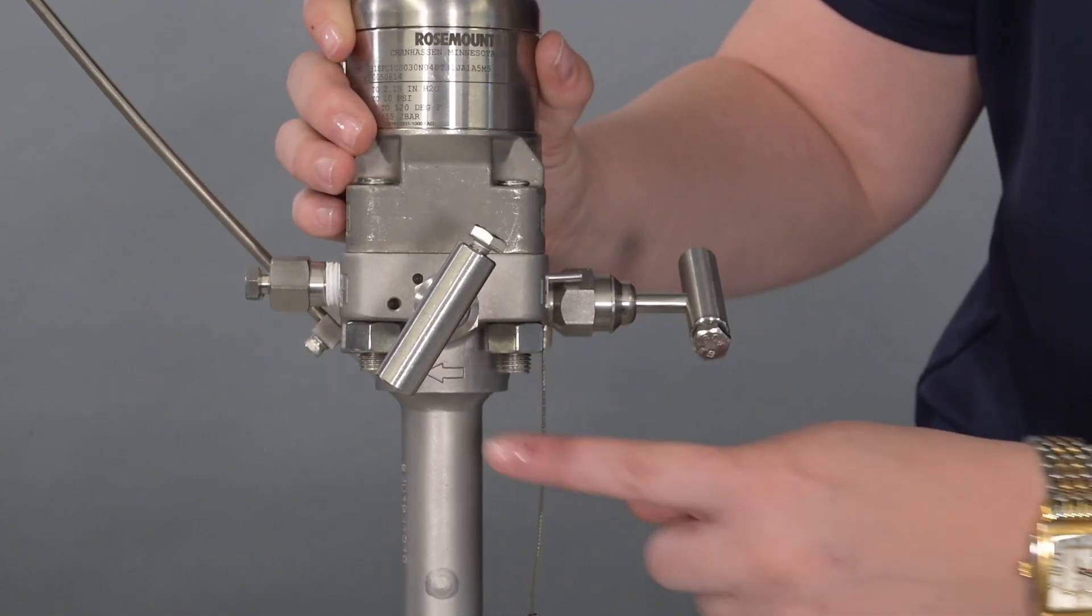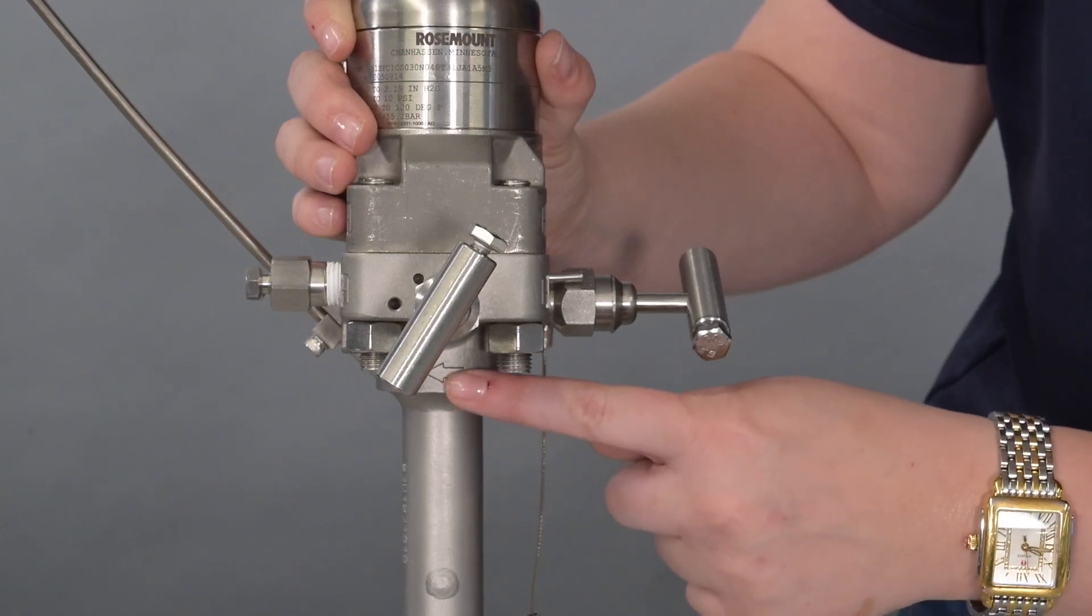We should also verify the flow direction on the arrow of the neck of the 405. Now we can check to make sure we have the proper straight run requirements for the line size. In most cases, a conditioning orifice plate will only need a straight run of two pipe diameters upstream and two pipe diameters downstream.